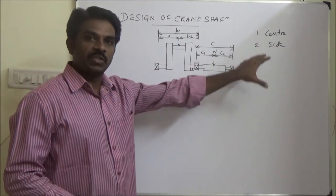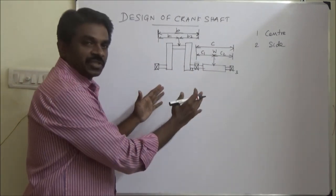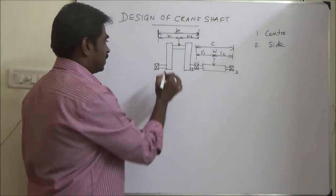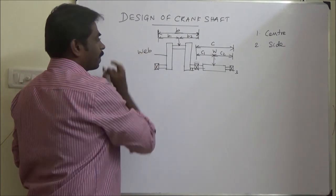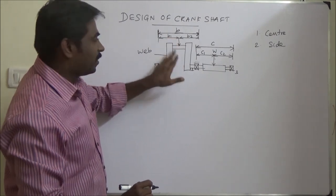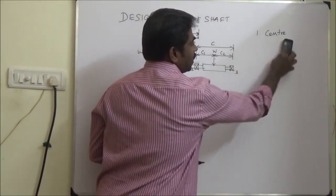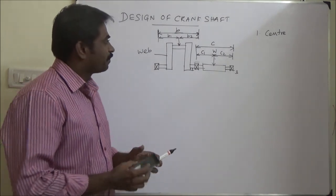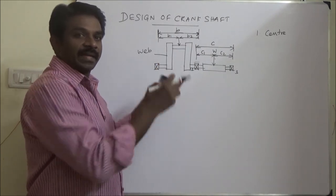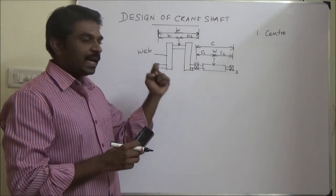The major difference between these two is that the center crankshaft will have two webs, while the side crank will have only one web. Today we will see the center crankshaft. Based upon the load acting on it, the crankshaft is subjected to bending moment and twisting moment.